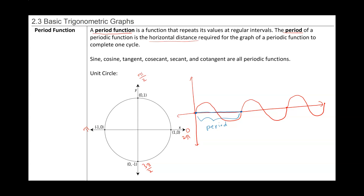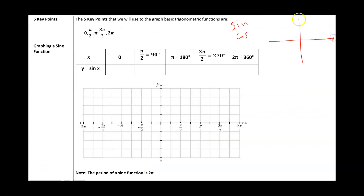Let's keep these ordered pairs on the unit circle in mind for each of these angles. I have zero, pi over two, pi, three pi over two, and two pi. The unit circle has the following ordered pairs: (1, 0), (0, 1), (-1, 0), and (0, -1). Remember that the sine of any angle is going to be the y-value of the ordered pair on the unit circle.